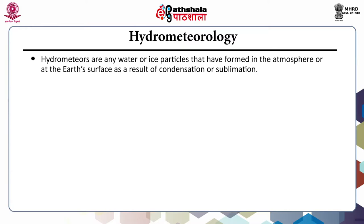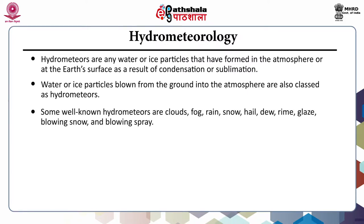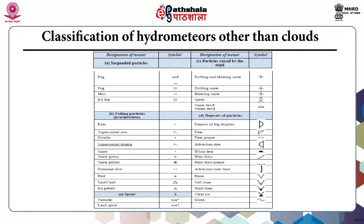Hydrometeors are any water or ice particles that have formed in the atmosphere or at the earth's surface as a result of condensation or sublimation. Water or ice particles blown from the ground into the atmosphere are also classified as hydrometeors. Some well-known hydrometeors are clouds, fog, rain, snow, hail, dew, glaze, blowing snow and blowing spray. You can see in this table the classification of hydrometeors other than clouds and their symbols as given by the World Meteorological Organization.